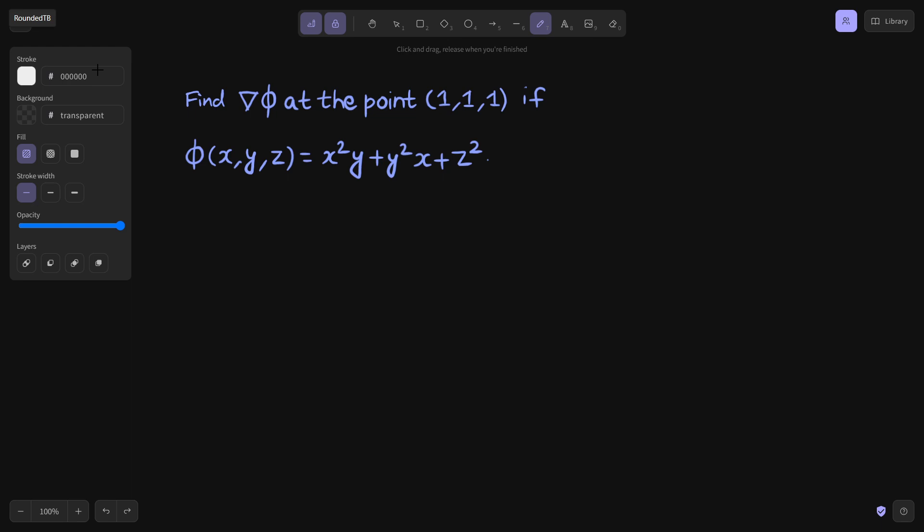We know that gradient of phi is given by i ∂φ/∂x + j ∂φ/∂y + k ∂φ/∂z.